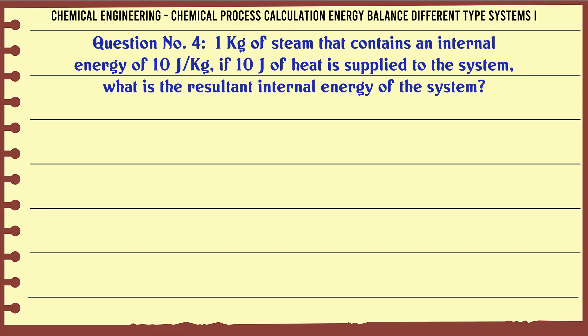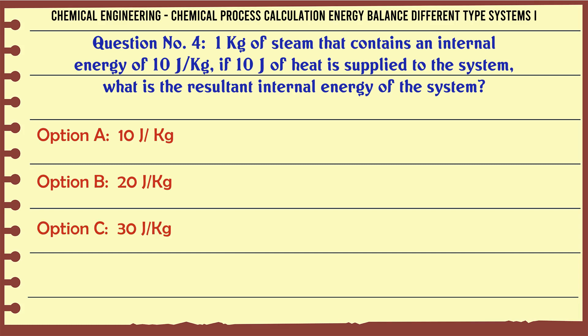1 kg of steam contains an internal energy of 10J/kg. If 10J of heat is supplied to the system, what is the resultant internal energy of the system?